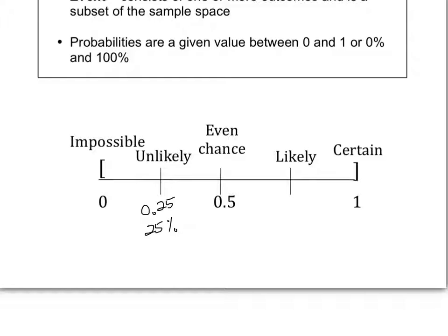An even chance is 0.5 or 50%, meaning you have the same probability that it could happen as it couldn't. Likely would be 0.75 or 75%: if you have a 75% chance of something happening, it's likely to happen, but it could still not happen. A 100% chance — that is, 1 — is certain: there's no way it could not happen. You'll be able to compare whether something is likely, unlikely, even, certain, or impossible.